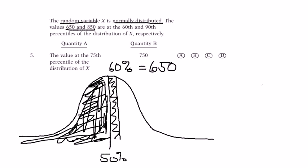Now, the question is, is the 75th percentile halfway between 60 and 90? Or is it more towards the 60, or is it more towards the 90?